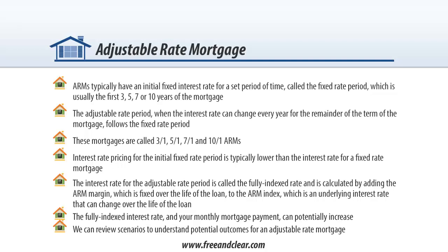These mortgages are called 3-1, 5-1, 7-1, and 10-1 ARMs. So in the case of a 7-1 ARM, the interest rate is fixed for the first 7 years of the mortgage and then is subject to adjust annually for the remaining 23 years of the mortgage.